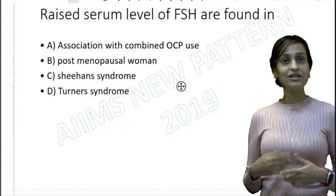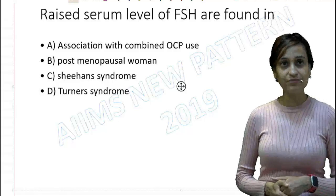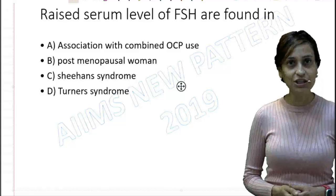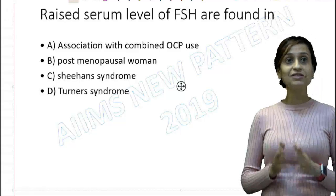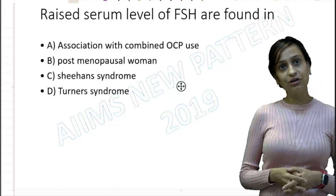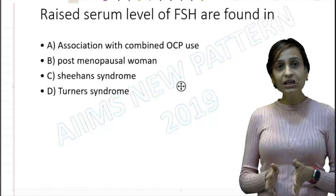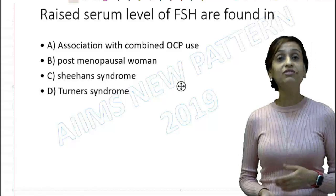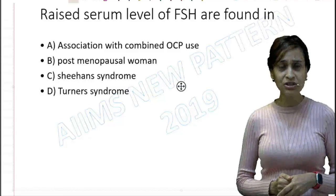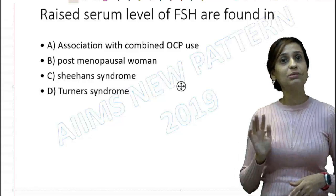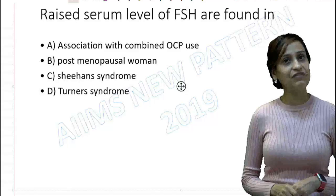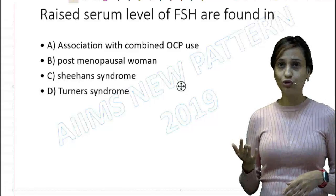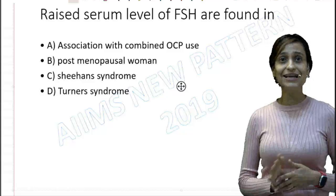The question is: raised serum level of FSH is found in. Let's look at option A, which says association with combined OCPs. This is incorrect because with combined OCPs there is feedback inhibition by the hormones, which in turn leads to suppression of LH and FSH. So the FSH levels are not going to be high, and option A is incorrect.